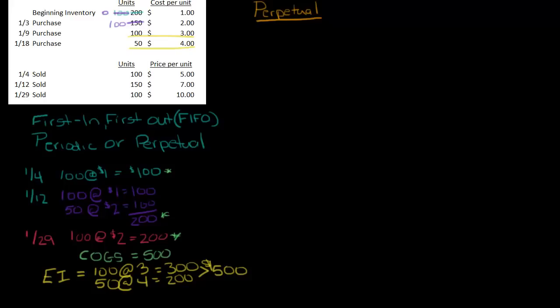So under the perpetual system, let's look at 1-3. So on 1-3, what are we doing? We're purchasing inventory, right? So inventory, which is an asset, is increasing, and accounts payable is increasing. So my debit and my credit. So again, we said that was 150 units times $2 a piece. So that's 300 and 300. So in perpetual, we're going to use inventory rather than purchases.